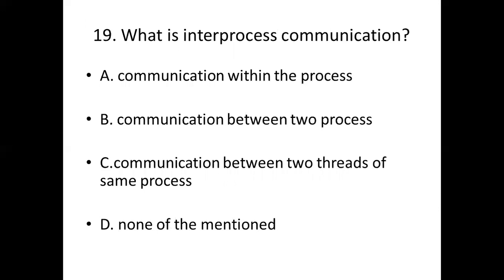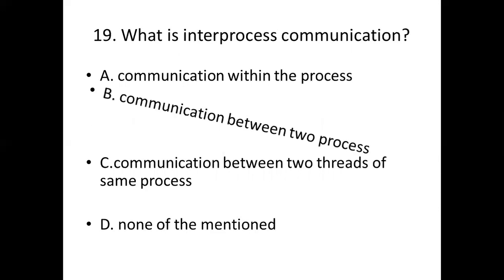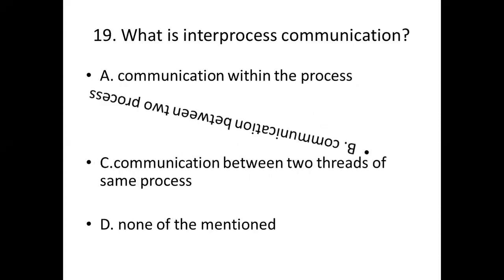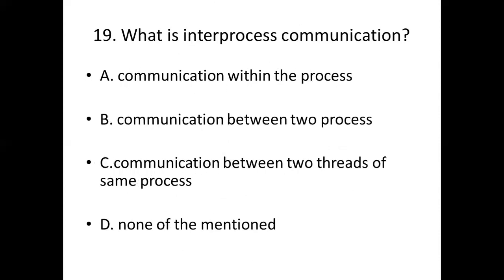Nineteenth bit. What is inter-process communication? Option A, communication within the process. Option B, communication between two processes. Option C, communication between two threads of the same process. Option D, none of the mentioned. Answer: Option B, communication between two processes.